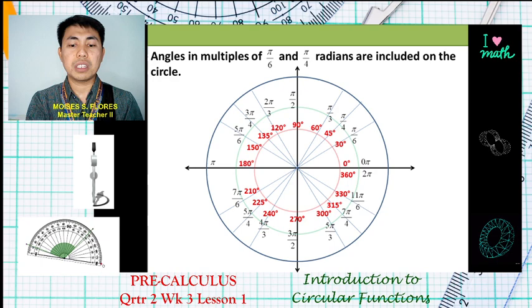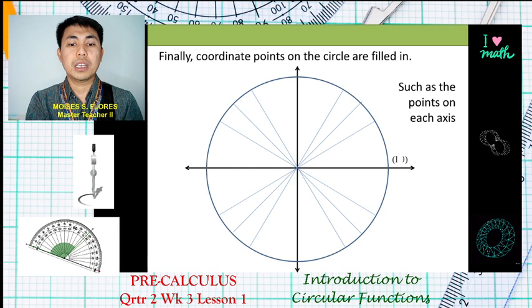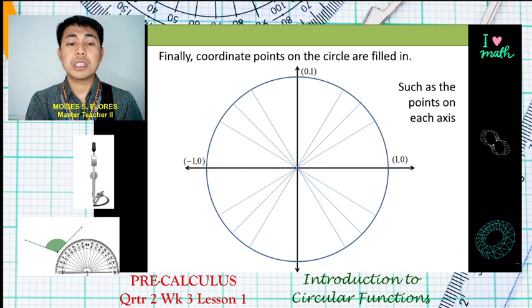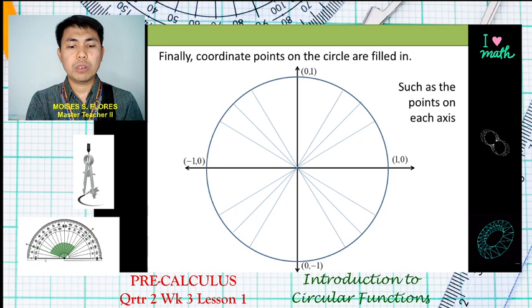After determining the different angles included in our unit circle, let us now determine the coordinates of the unit circle, starting with the axes. We have (1, 0), (0, 1), (-1, 0), and (0, -1).